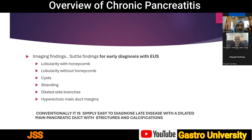Endoscopic ultrasound (EUS) is very helpful in picking up subtle early findings such as lobularity with honeycomb appearance, small areas of cystic dilatation, minimal calcification, parenchymal stranding due to inflammation, dilatation of side branches, and hypoechoic margins of the main pancreatic duct. In advanced-stage chronic pancreatitis, diagnosis is straightforward even on conventional ultrasound, where you can see a dilated main pancreatic duct with multiple strictures and calcifications.